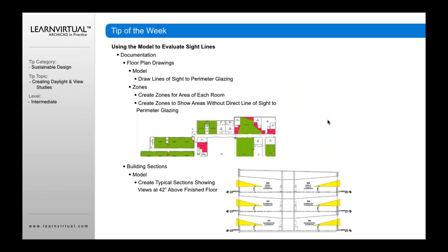From the documentation side, you can use floor plans to evaluate sight lines — that's another part of your LEED analysis. You can use the model to draw lines of sight to the perimeter glazing, which is what the red and green lines are showing here. The zones can be used to show areas without direct line of sight to perimeter glazing — that's where the red is showing.